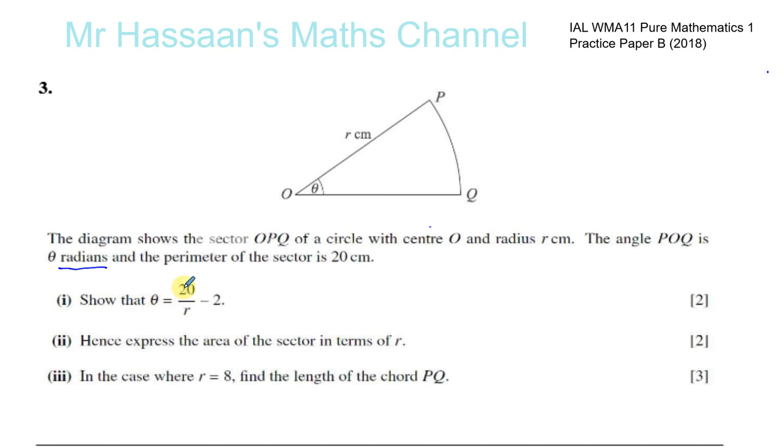Show that theta is 20 over R minus 2. So they've given us that the perimeter is 20 centimeters and theta is in radians. Now the perimeter of a shape is the length of the outline of the shape. So this shape is enclosed by this radius and this radius here, and also by this arc. I call it L, the length of this arc here, PQ. And I know that the length of an arc is given by the formula R times theta if theta is measured in radians.